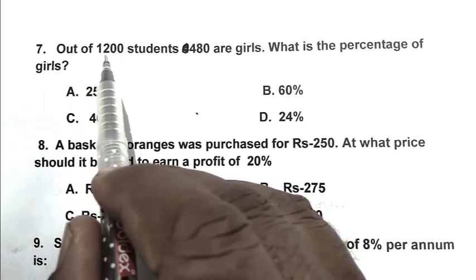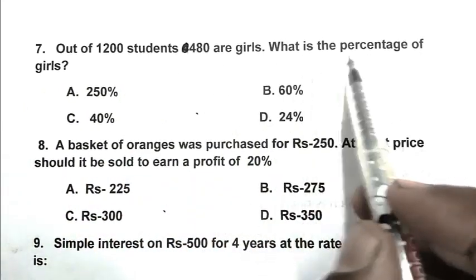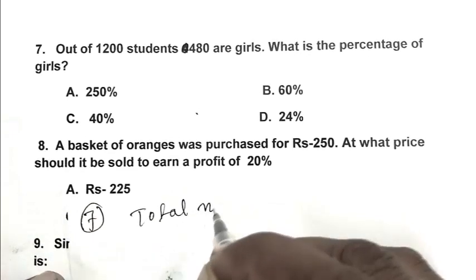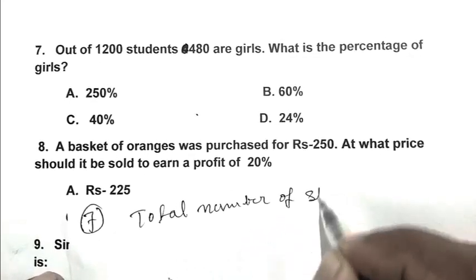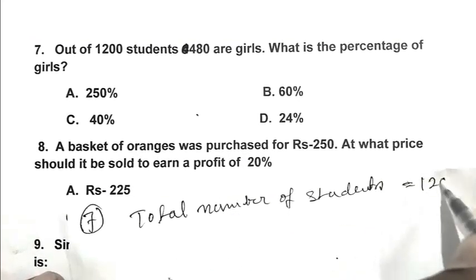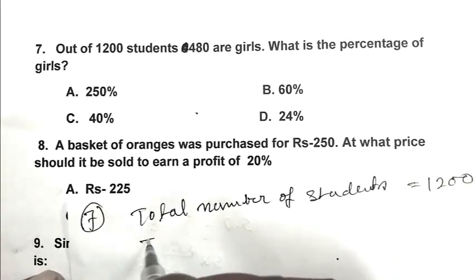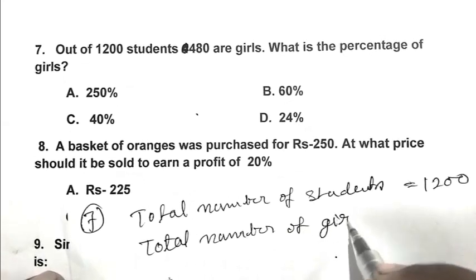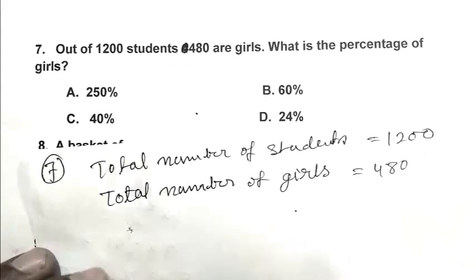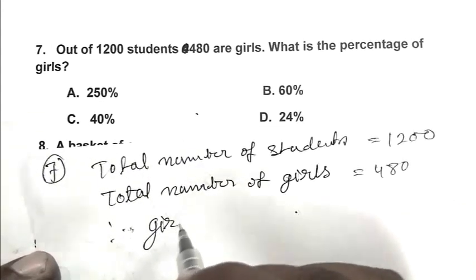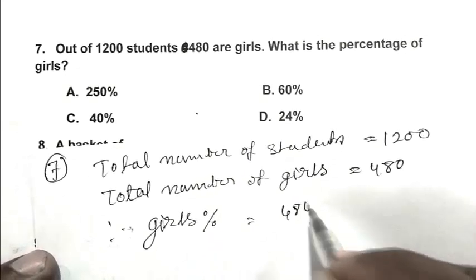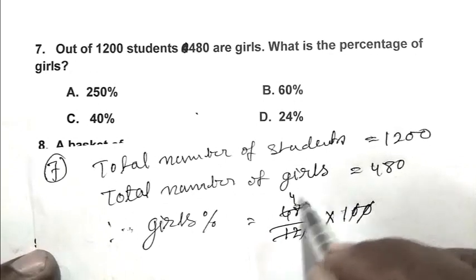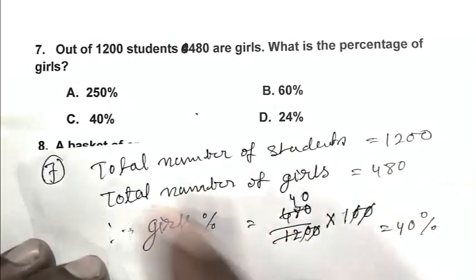Question number 7: Out of 1200 students, 480 are girls. What is the percentage of girls? Total number of students, that is 1200. Total number of girls, that is 480. Therefore girls percentage is 480 by 1200 multiplied by 100. So it becomes 40%. So C is the right answer.